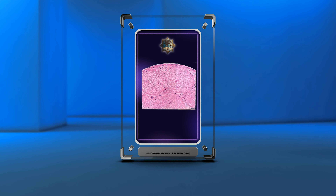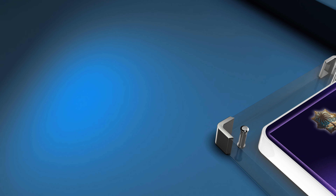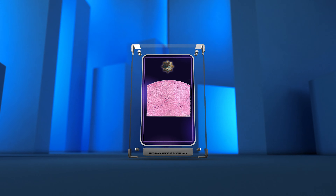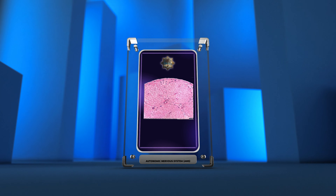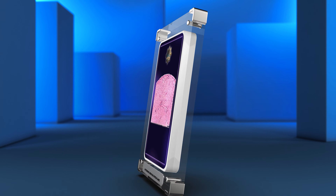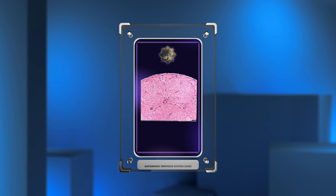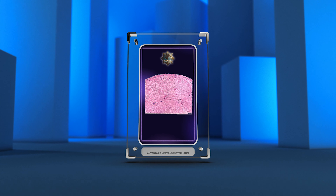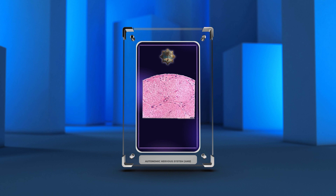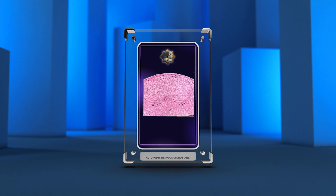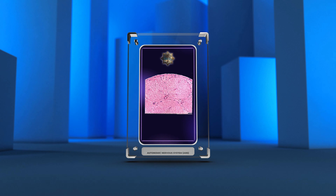Welcome to today's lecture on the histology of the autonomic nervous system. In this lecture, we will explore the intricate details of the sympathetic and parasympathetic divisions of the autonomic nervous system. We will examine the structure and function of various components, the effects on different organ systems, neurotransmitter regulation, pharmacology, and clinical disorders associated with this complex system. Let's begin our journey into the microscopic world of the autonomic nervous system.